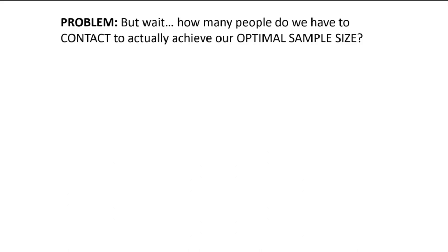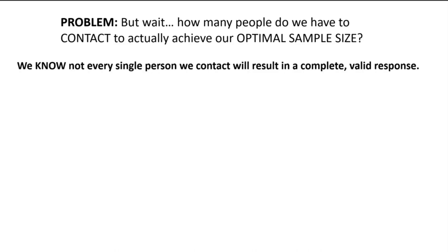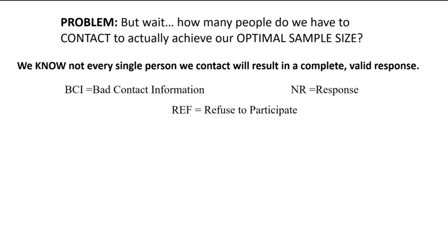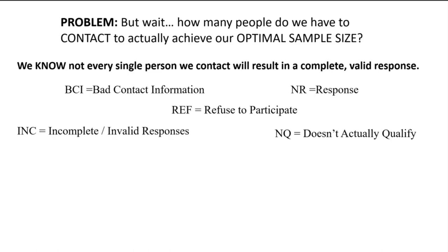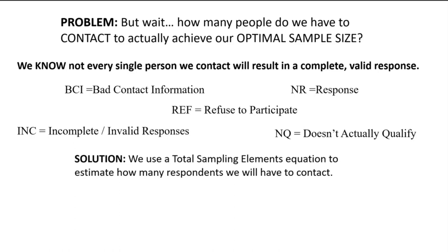Although we've learned the basics of setting up and applying the optimal sample size formula, we still have a problem: how do we determine exactly how many individuals we need to contact in our sampling frame to actually achieve our optimal sample size? Not every person we contact will result in a complete, valid response. We might have bad contact information, non-response, active refusals, disqualified respondents, dropouts, or invalid survey responses. The solution is the total sampling elements equation, which estimates how many respondents we'll likely have to contact to reach our valid sample size.